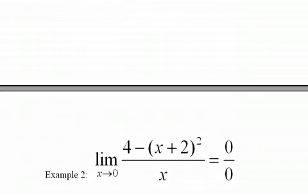This next limit I'm going to do, 4 minus (x + 2)² over x, as x heads to zero from both sides.